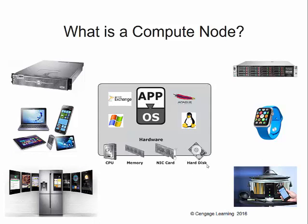A compute node also has to have long term storage — storage that persists past reboots, meaning it stays around after you turn the power off and is still there when you power back up. The last piece you need is some interface to some type of network — a NIC, a network interface card. Traditionally these have been wired cards, especially on servers. But more and more, these NICs are now wireless cards — not just Wi-Fi, but things like Bluetooth and near-field communications — something that gives us access to a network.